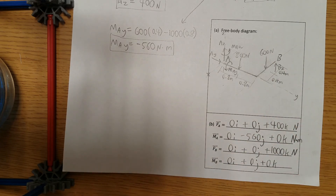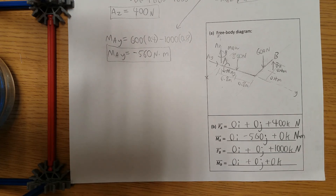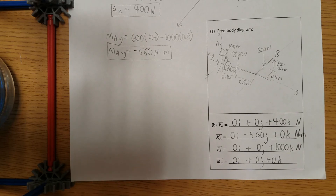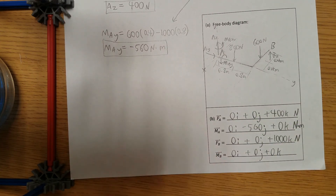That's how you solve problem 2 of exam 2 from spring 2017. It wasn't too difficult — 3D equilibrium hopefully won't be too challenging on the test. The free body diagram is always key to these types of problems. Know how to sum forces and moments. I hope this made sense and I hope everything's correct for you all.